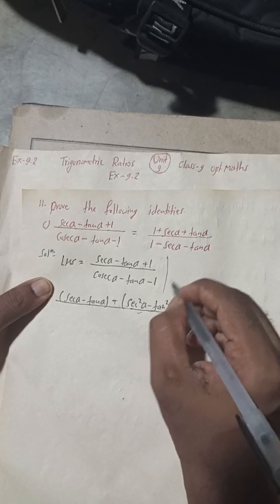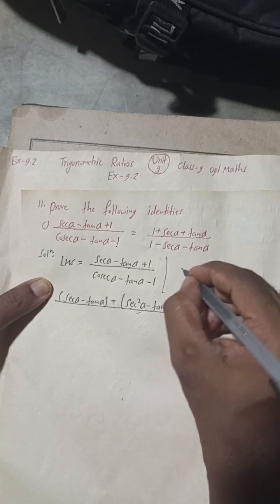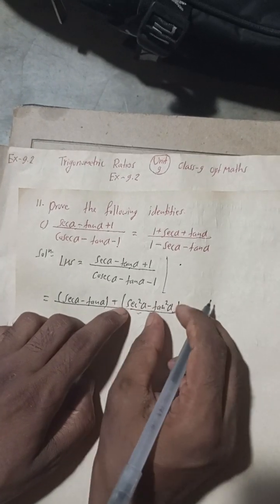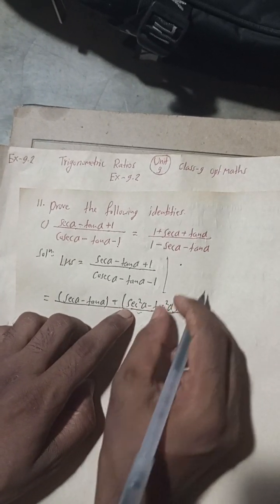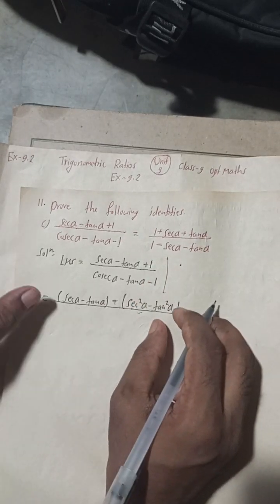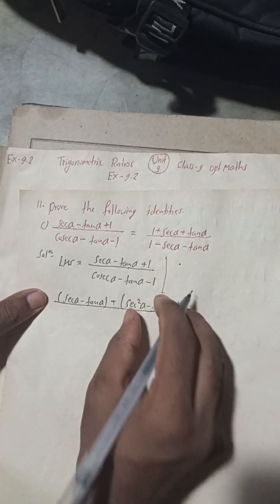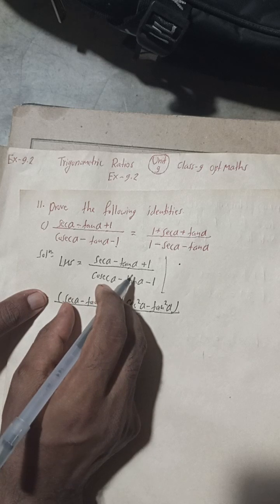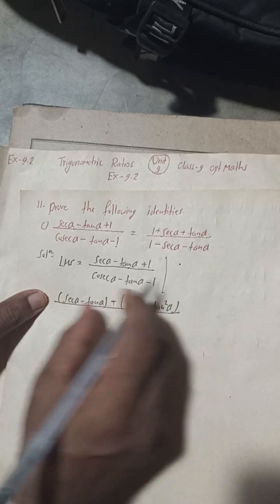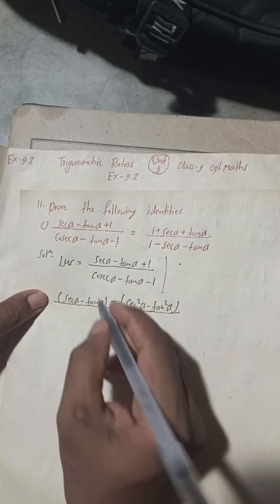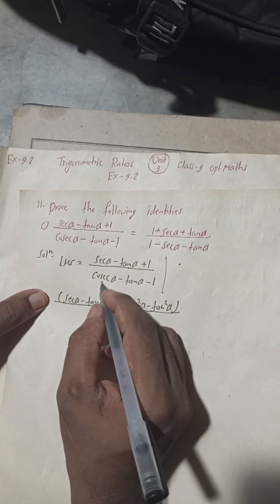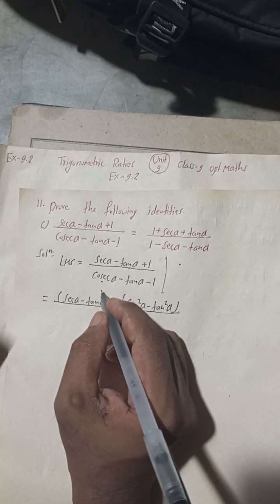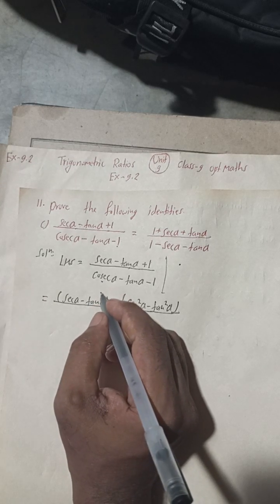Because we have the formula sec²α minus tan²α equals 1, so in place of 1 we have written this. Now we take common in this way — we have written this form.